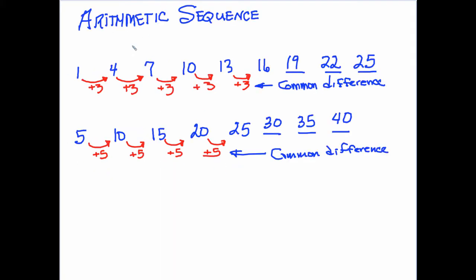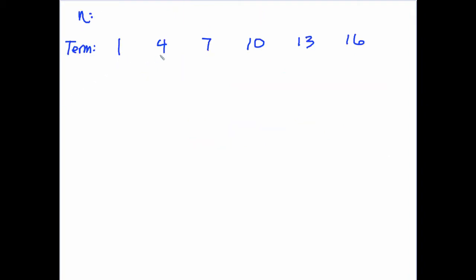The only arithmetic sequences are ones where the difference between successive members is the same — the difference has to be the same. The numbers in a sequence — 1, 4, 7 — are called terms. When we have a sequence, we number the terms, and usually we represent the number of the term with the variable n. So 1 is the first term, 4 is the second term, then the 3rd, 4th, 5th, and 6th.